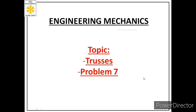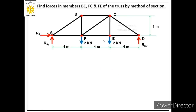Welcome students. Today we will solve the seventh problem on trusses and learn about the method of sections. We will solve this problem through the method of sections. We are given one truss and are asked to find forces in members BC, FC, and FE of this truss by the method of sections.